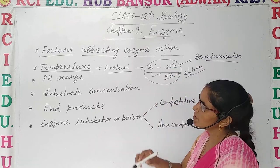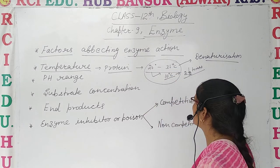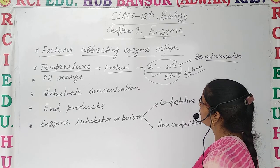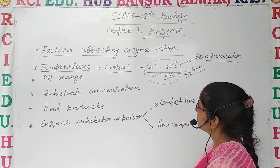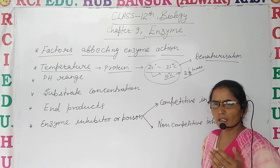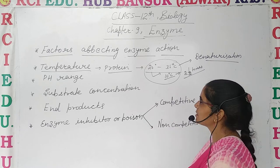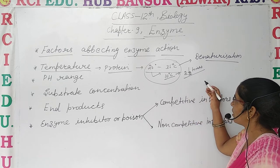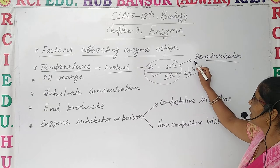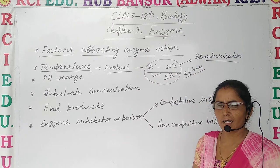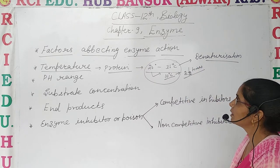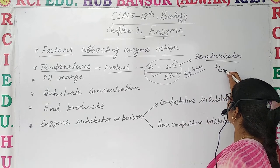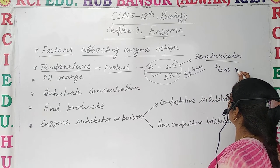The optimum activity range is from 20 degrees Celsius to 35 degrees Celsius. During this range, if temperature increases by 10 degrees, it enhances enzyme activity about two and a half times. But beyond that, an increase in temperature causes denaturization of the enzyme.